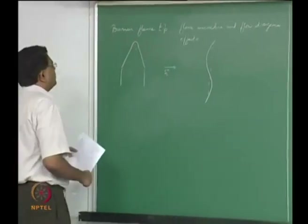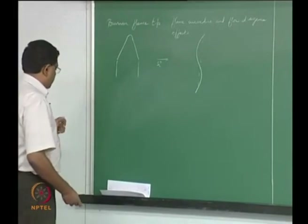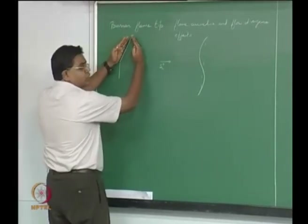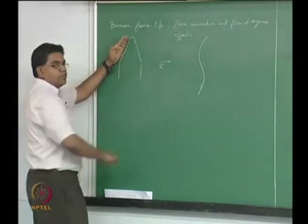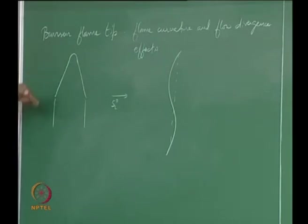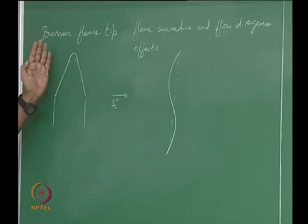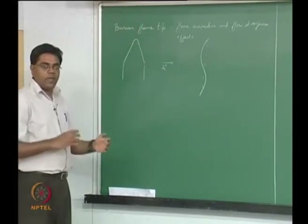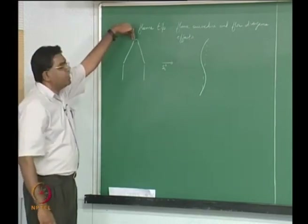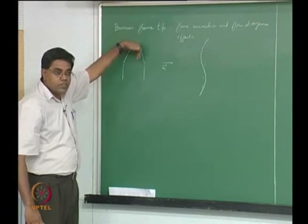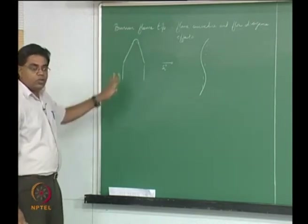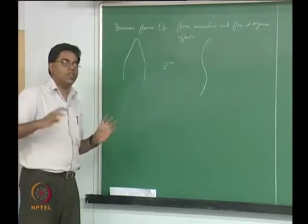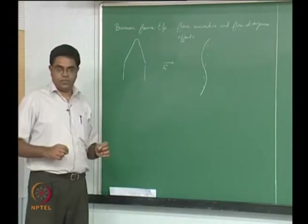We were talking about what happens to the Bunsen burner at the tip. We found that flame stabilization at the shoulder involves the normal component of flow velocity balancing the flame speed normal to the flame itself, and therefore the flame shapes itself accordingly. But at the tip, no matter what the flame speed-flow velocity balance is, the tip always has to propagate directly against the flow. So the question is how does that happen.